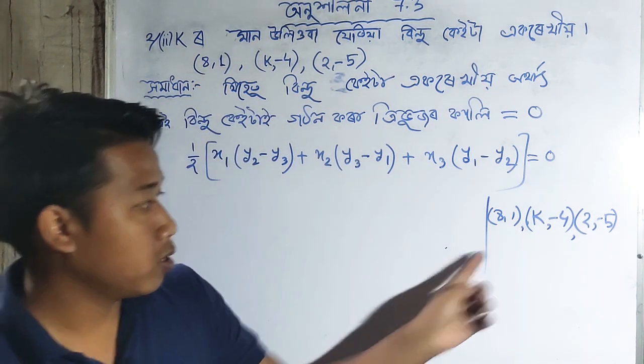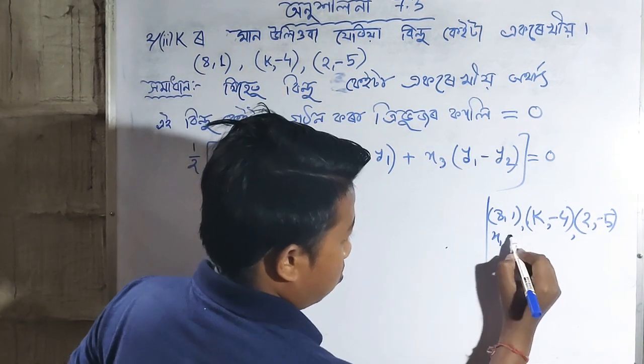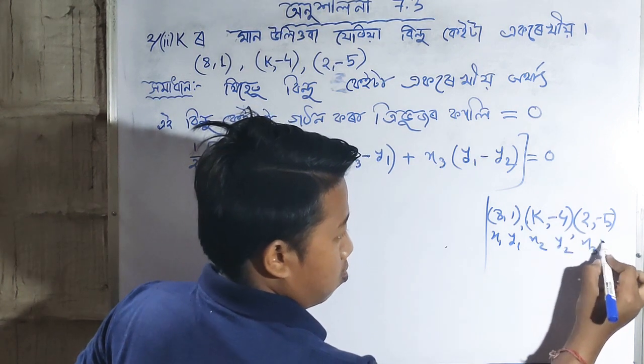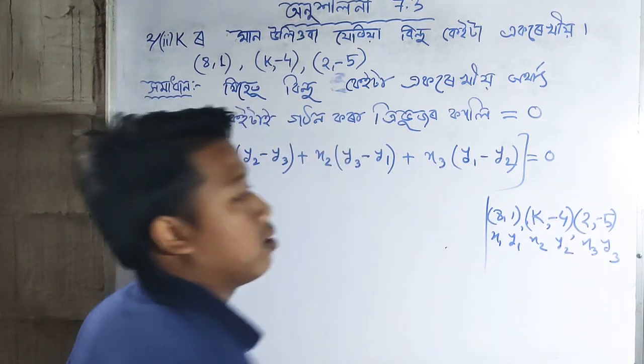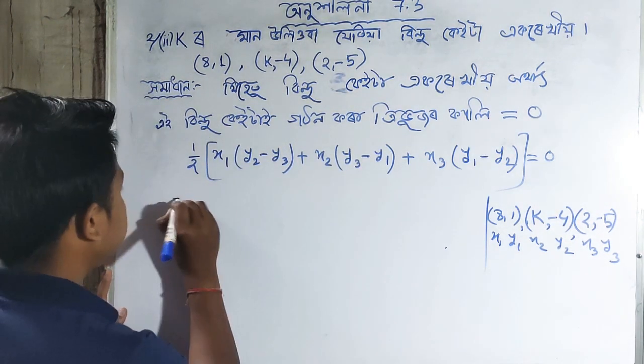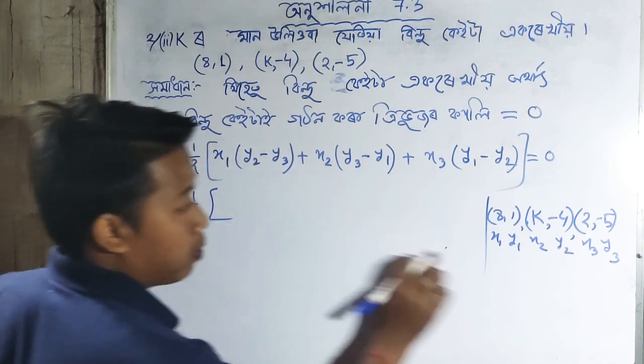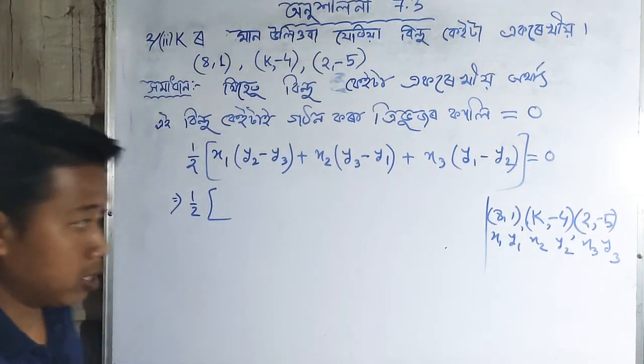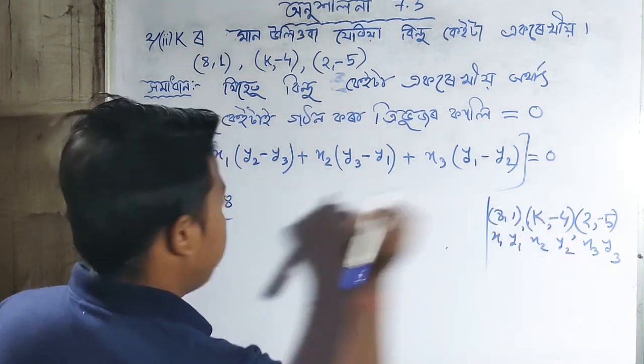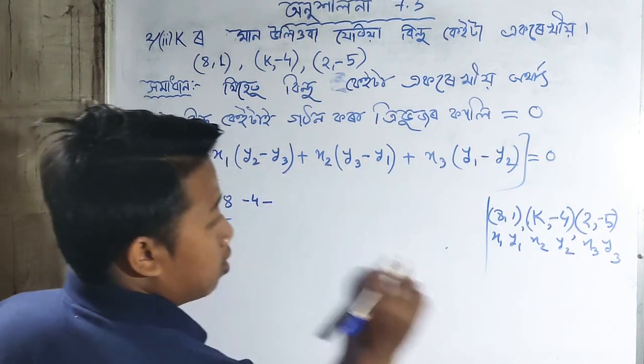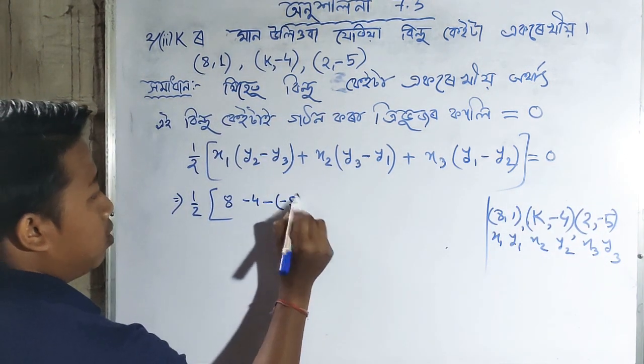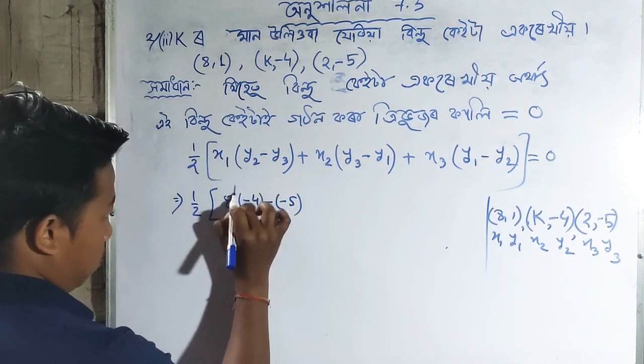Let me write out the formula with these values. It becomes: one half times [x1(y2-y3)] which is 3 times (-4 minus -5). Then plus x2(y3-y1) which is K times (-5 minus 1).